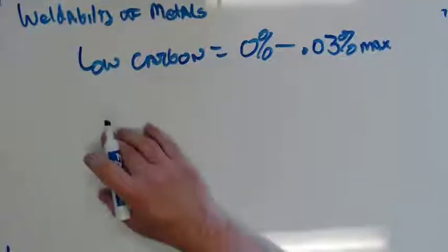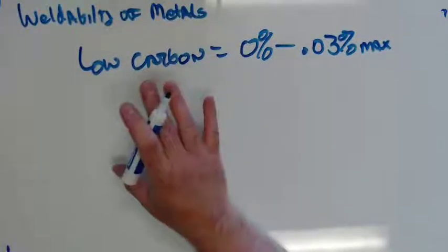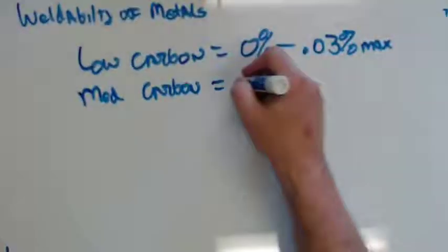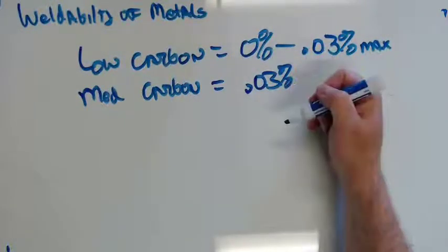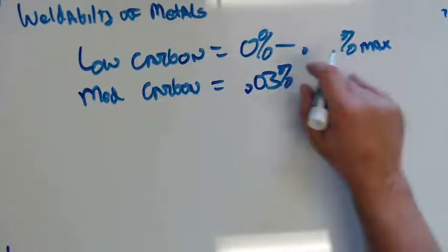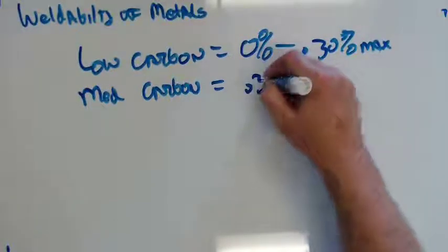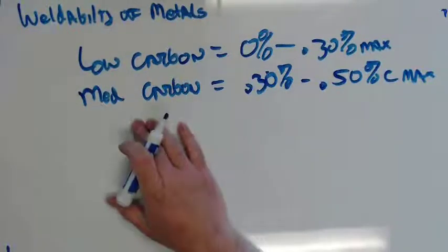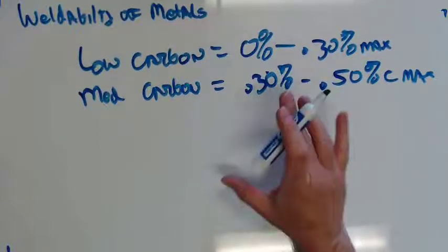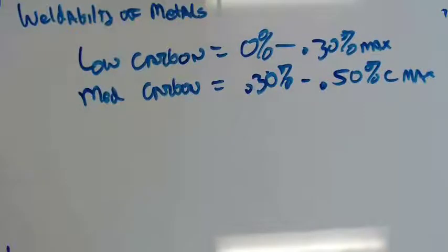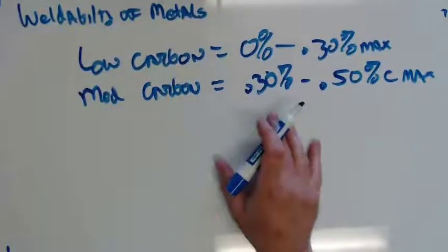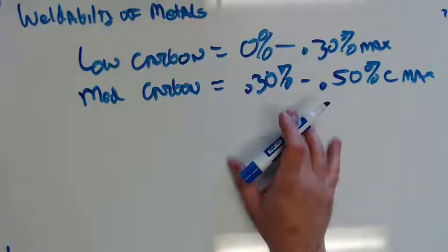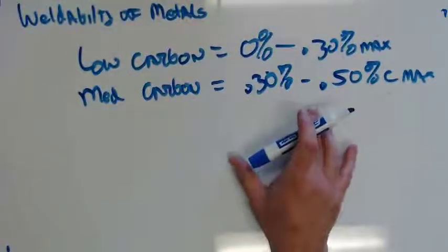Medium carbon equals 0.30% to 0.50% carbon max. So medium carbon steels, so 4140 falls into that range. When we talk about carbon equivalency, we'll actually do 4140, and we'll see that it actually falls a little above that with all its alloying elements. But medium carbon steels, they are fairly weldable, but they take some care. You're going to be preheating and post-heating this stuff, or you're going to have problems. Anything in this range is weldable, but we've got to be real careful with it. We've got to make sure we've got the right filler. We've got to make sure we understand what we're doing. We've got our heat right, all that kind of stuff.